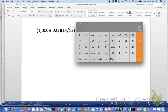Using the most basic calculator, I'll type 1,000 times 0.025 times—and to put in the fraction, I'll use open parentheses, then type 14 divided by 12, then close the parentheses.